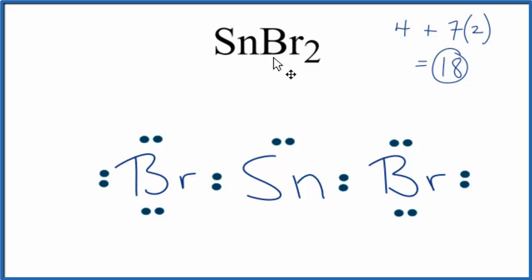but the electronegativity difference isn't that big between the atoms here, so we end up with these electrons being shared in the covalent bond, and that's why we have this Lewis structure.